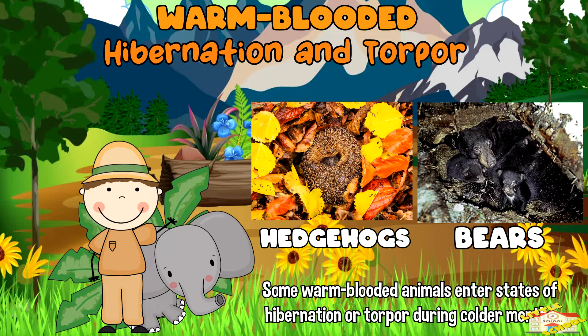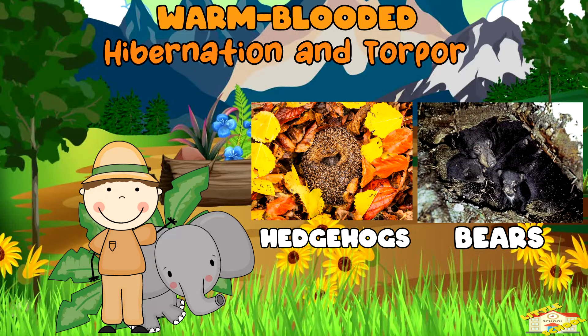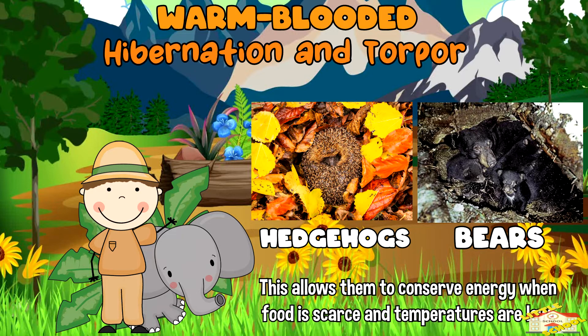Hibernation and torpor: some warm-blooded animals, particularly smaller mammals like hedgehogs and bears, enter states of hibernation or torpor during colder months. This allows them to conserve energy when food is scarce and temperatures are low.